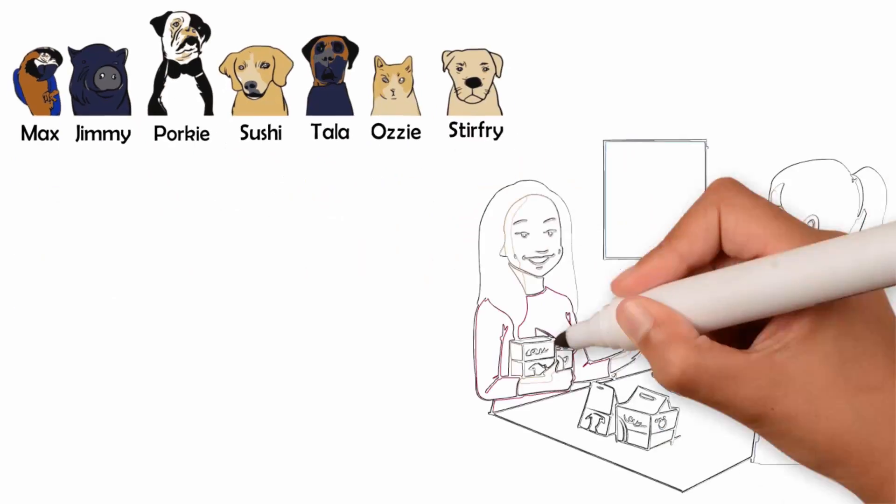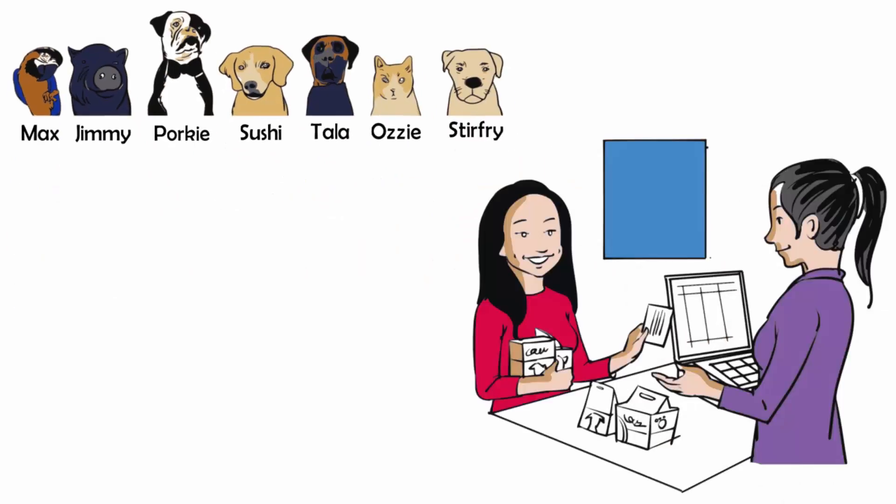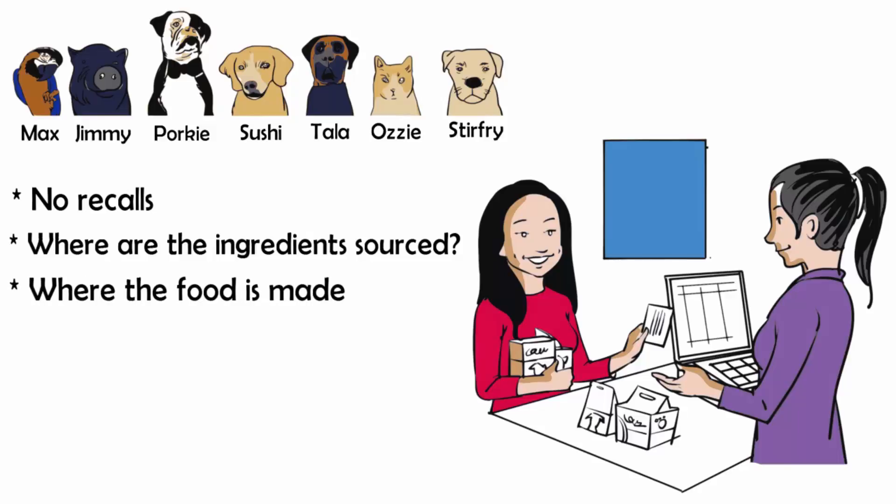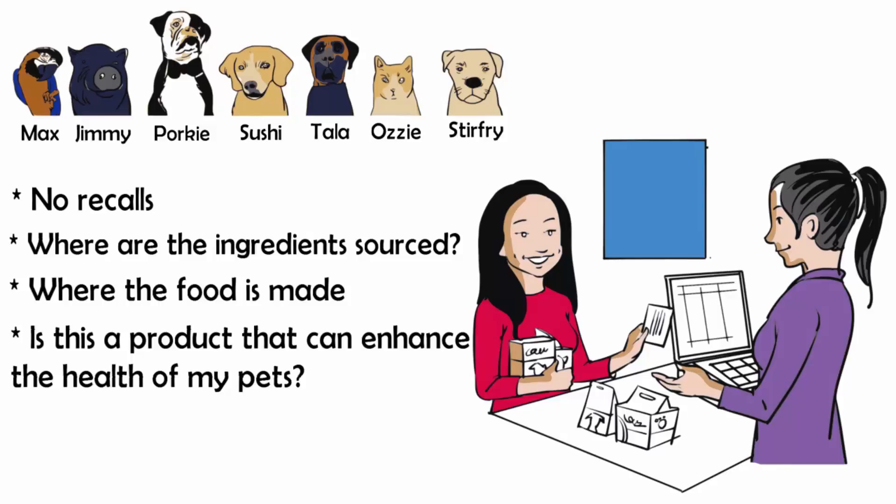When I choose products to carry in my store, they have to meet certain criteria. Number one, no recalls. Two, where are the ingredients sourced? Three, where the food is made. And four, is this a product that can enhance the health of my pets?